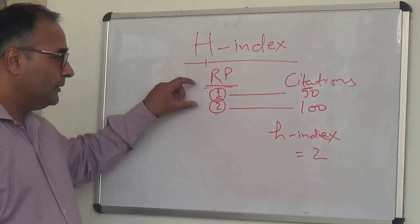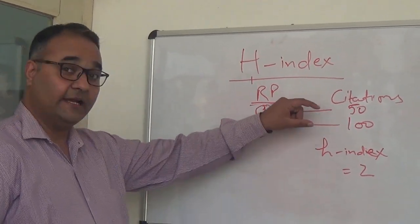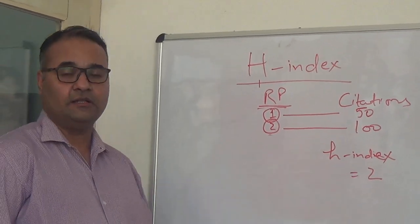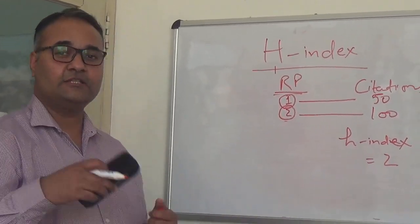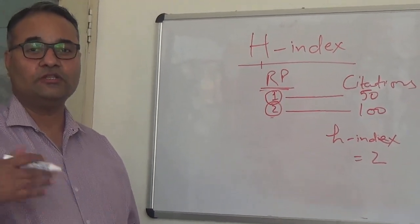So what does it mean? Even if your research papers have been cited many times—50 or 100 times—the H-index is still 2 only. I am sure after these 3 examples, this particular concept will be clear: what is H-index and how does it vary.